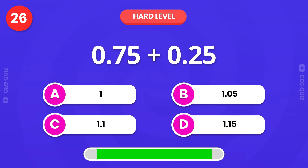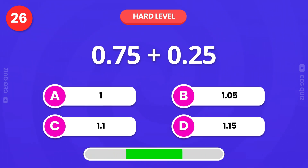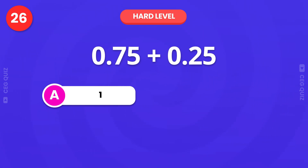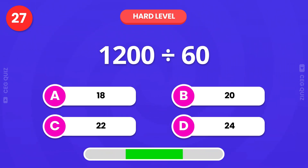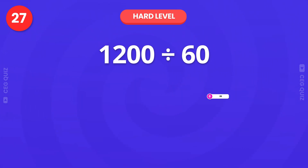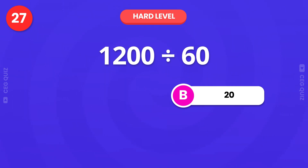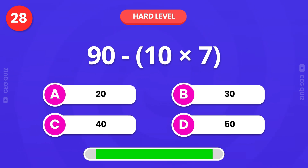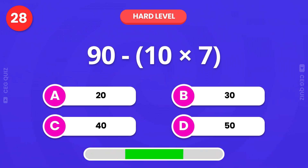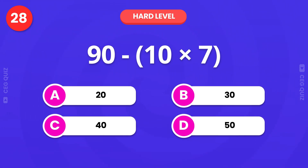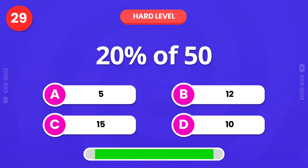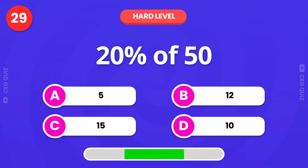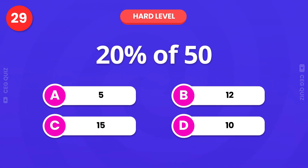Guess the correct answer. The answer is 1. Next, solve 1200 divided by 60. It's 20. What is 90 minus 10 times 7? The answer is 20. Calculate 20% of 50. It's 10.